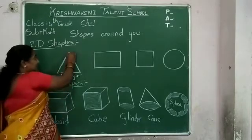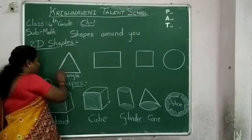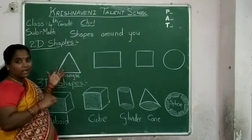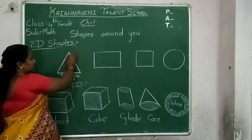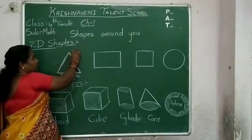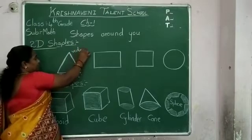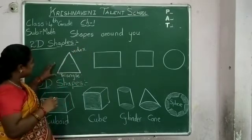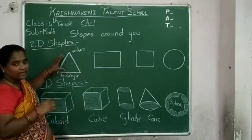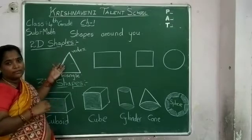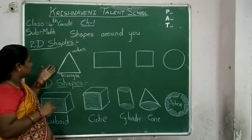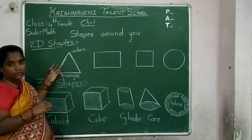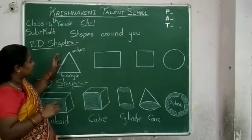The 3 sides meet at a point. This is called corners or vertices — this is called a vertex. So, every triangle has 3 sides and 3 vertices. An example of a triangle is the surface of a mountain. So many are there. Next.